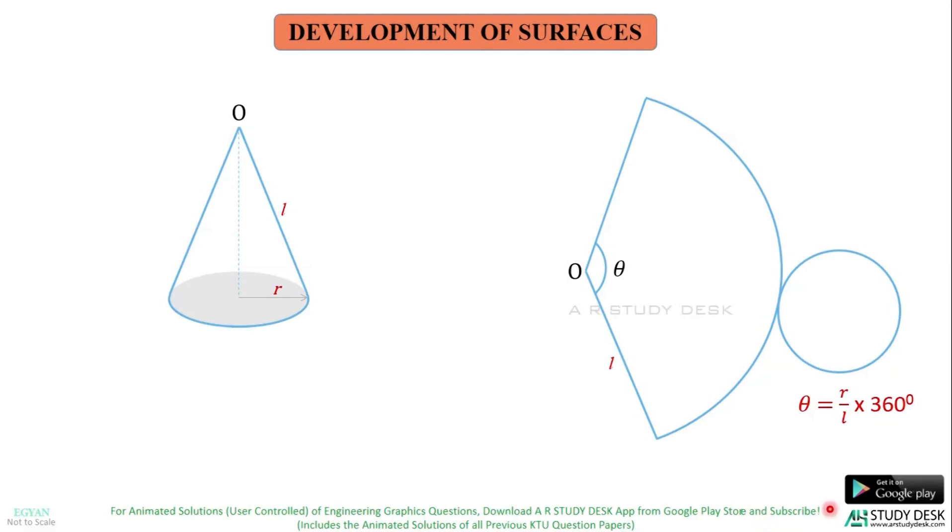As I said before, when you are asked a question on development of surfaces, you should first draw the simple portion of the solid according to the question and then draw the development. And we have complex questions on development like this cone is cut using a section plane which is inclined to HP and perpendicular to VP and the top portion is removed. Draw the development of the remaining portion of the cone. Such questions are to be solved. So, you can get different type of questions in our app which can be downloaded from Google Play Store. Thank you for watching. Happy learning.